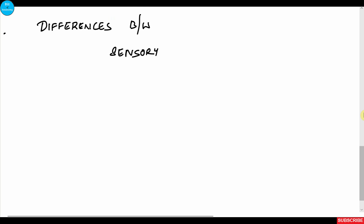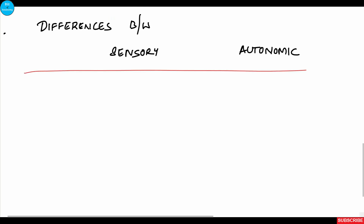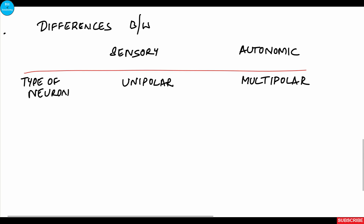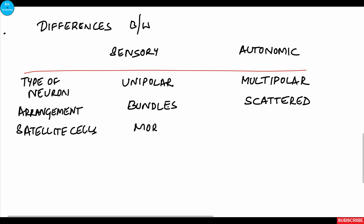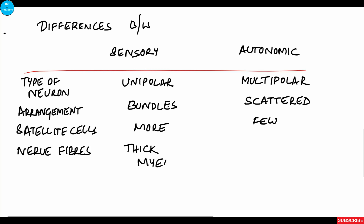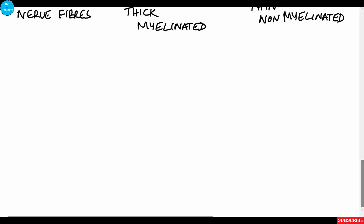The major differences between sensory and autonomic ganglia: sensory ganglia have unipolar neurons while autonomic ganglia have multipolar neurons. Neurons are arranged in bundles in sensory ganglia but scattered in autonomic ganglia. Satellite cells are numerous in sensory ganglia and few in autonomic ganglia. Nerve fibers are thick and myelinated in sensory ganglia, and thin and unmyelinated in autonomic ganglia.